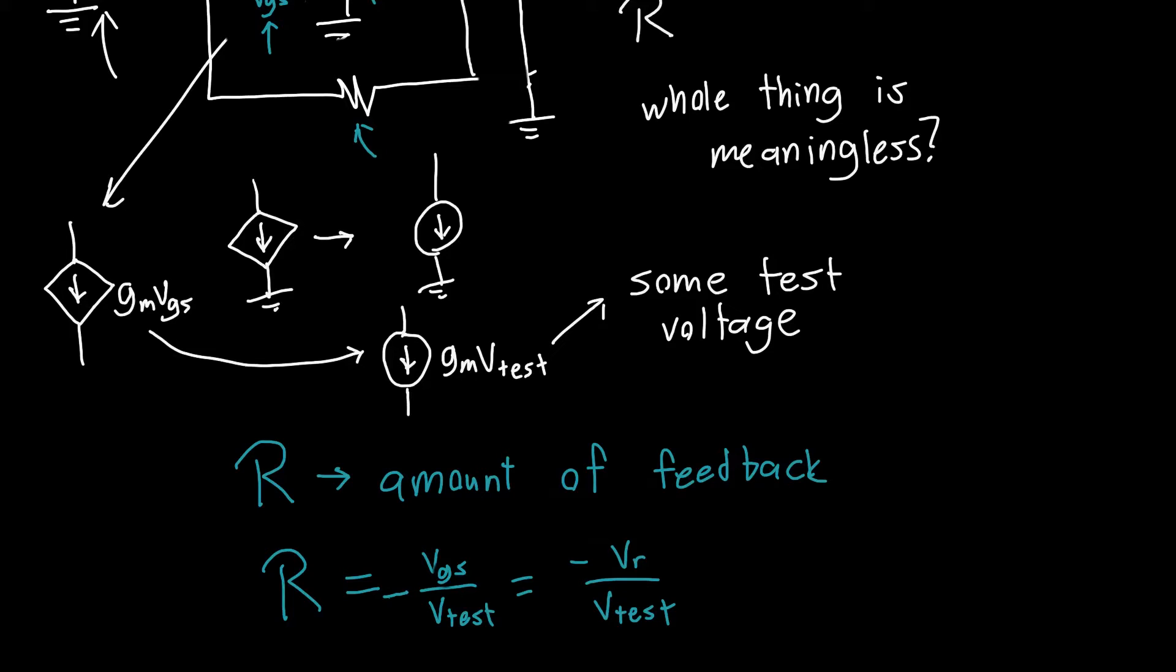So this is the return ratio. I always prefer to think of it in terms of Vgs because I think that's the most useful definition, and it will always work for all the dependent sources that you analyze in terms of transistors. But Vr is a more general form which allows you to use any voltage. It doesn't need to be Vgs, it just needs to be some dependent source that you replace.